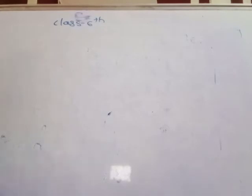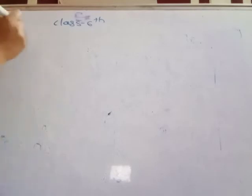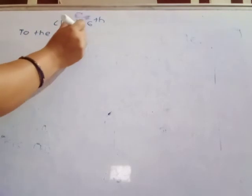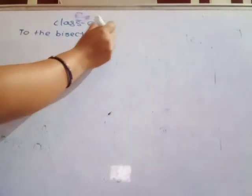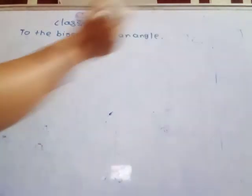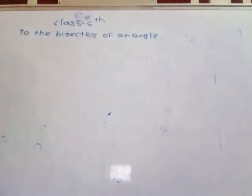Already we have studied how to draw an angle. But today we will see how to draw the bisector of an angle. Firstly, you draw angle ABC.